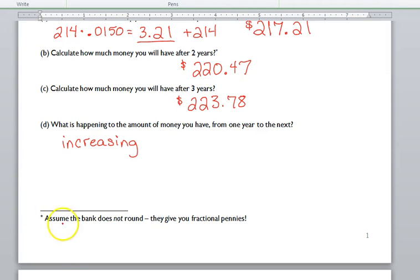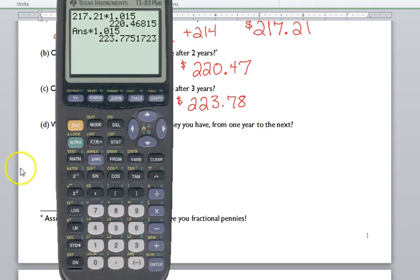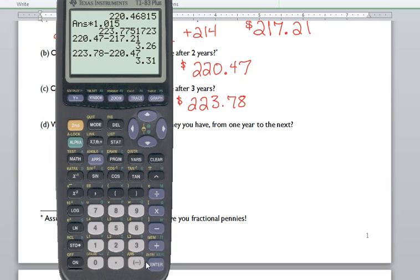The first time, it was $3.21. The second time, let's see how much it increases by... $3.26. And then, $3.31.